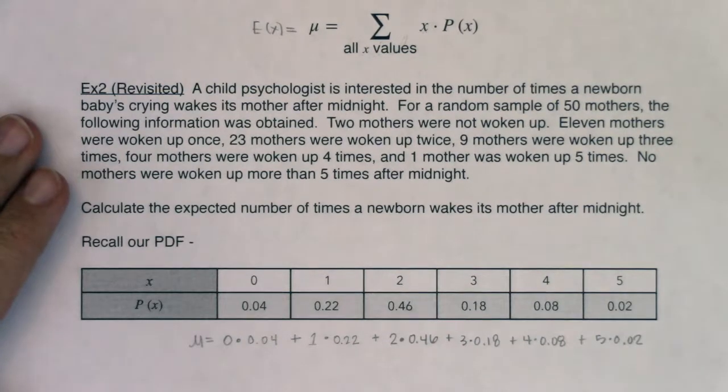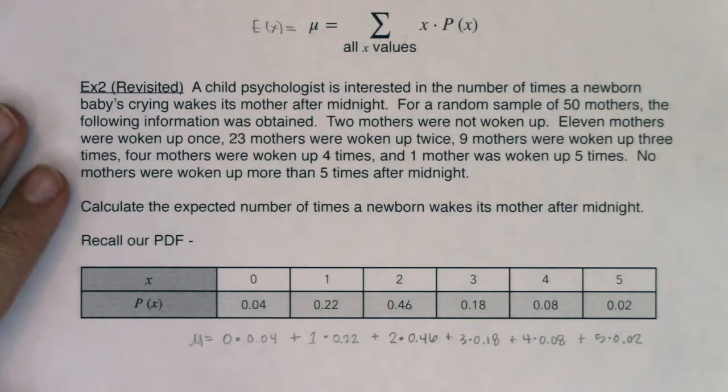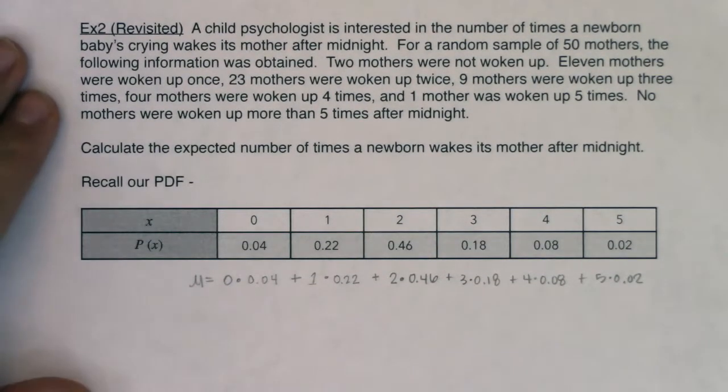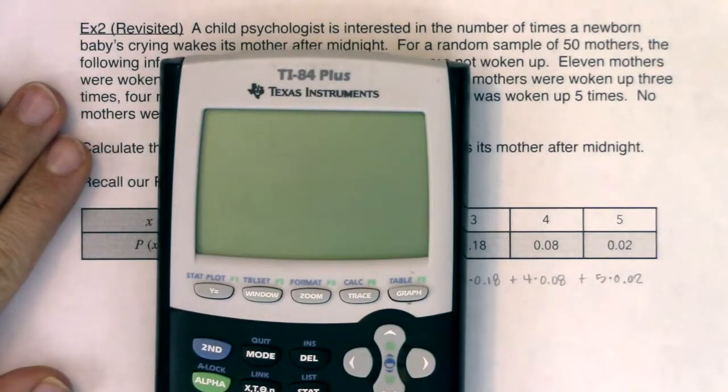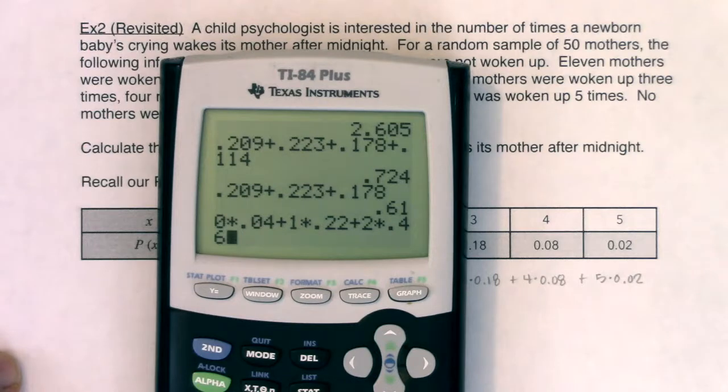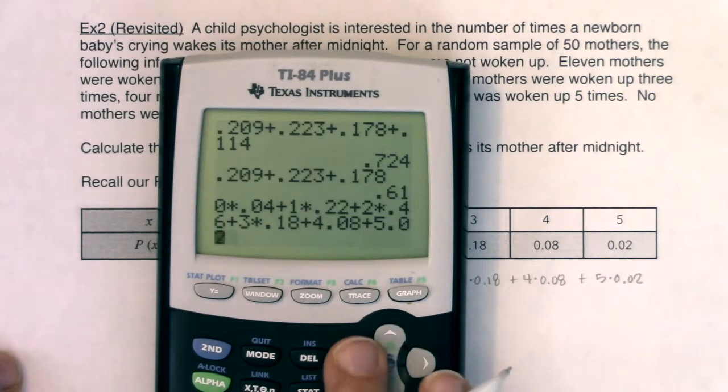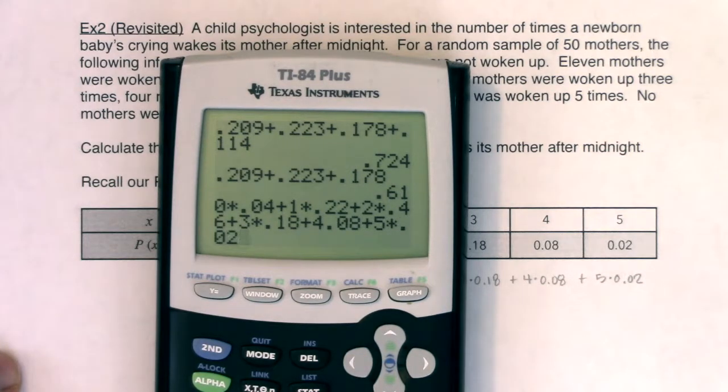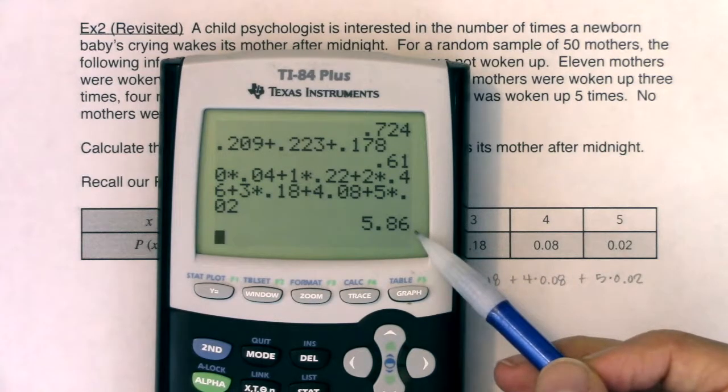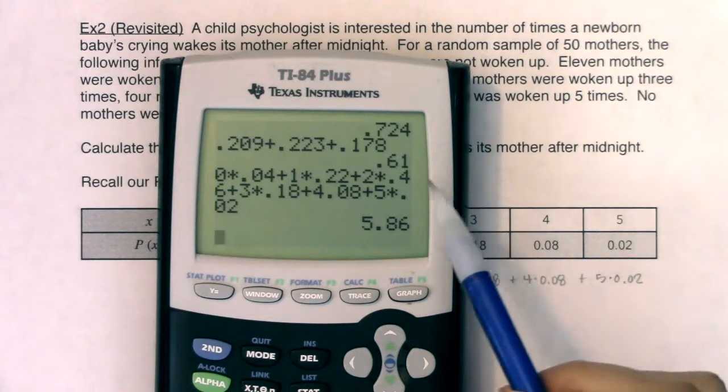So I've got a bunch of products in there, and it's a matter of going to my calculator and figuring out what this average is. Let me get my calculator. I'm going to do 0 times 0.04, plus 1 times 0.22, plus 2 times 0.46, plus 3 times 0.18, plus 4 times 0.08, and then finally 5 times 0.02. Let's hope I didn't make a typo - that's way too high, 5.86.